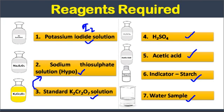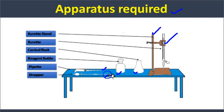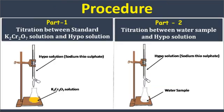The apparatus required in this titration includes: burette stand, burette, conical flask, reagent bottle, pipette, and dropper. This titration is performed in two parts.